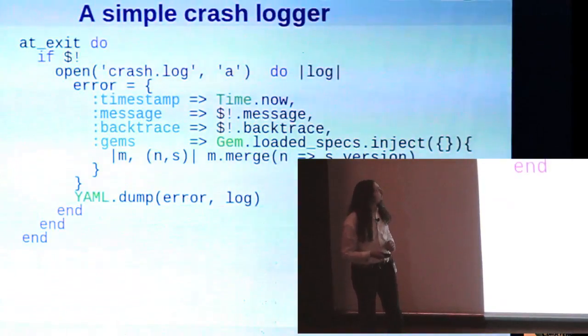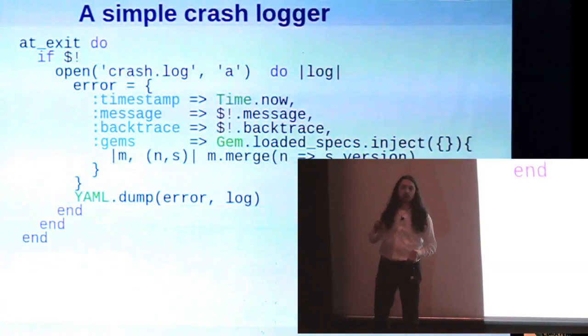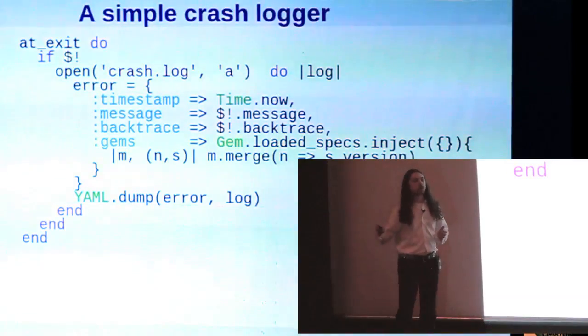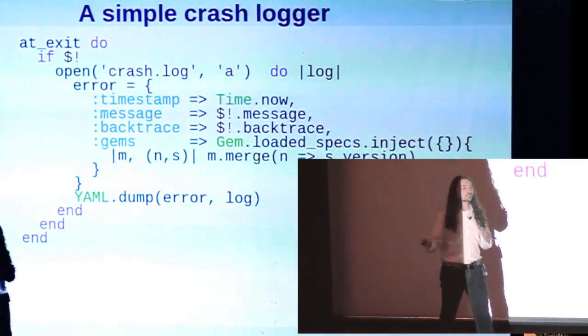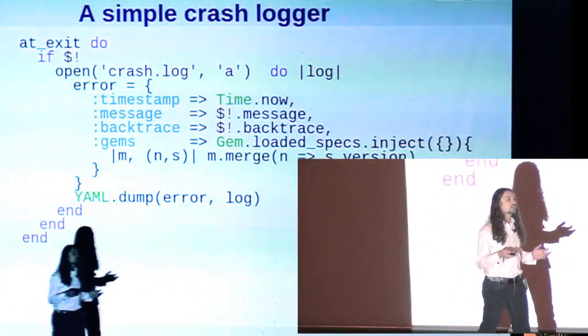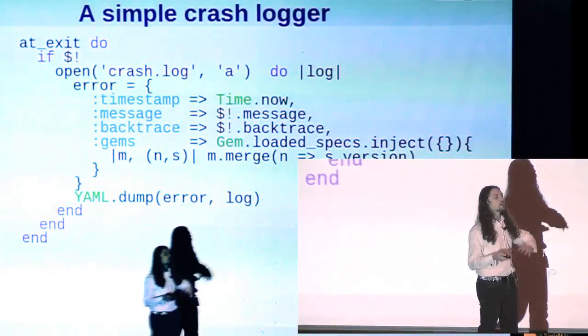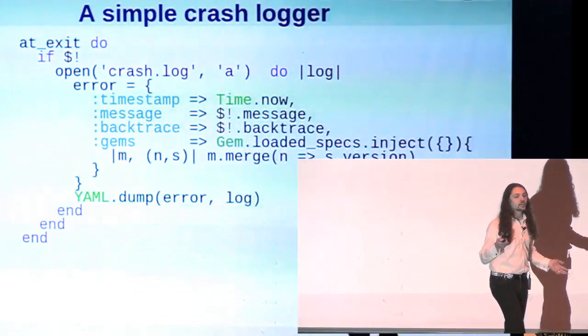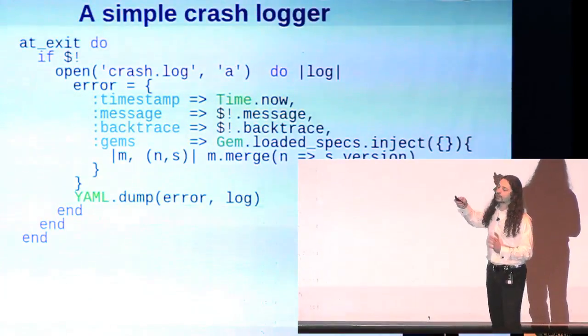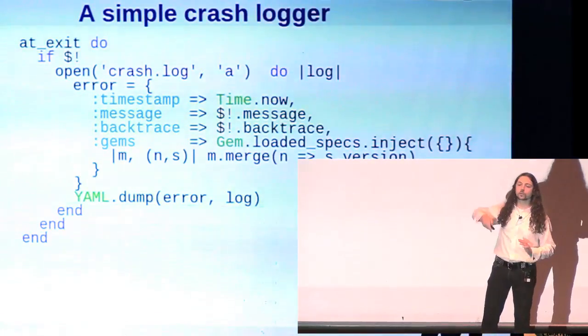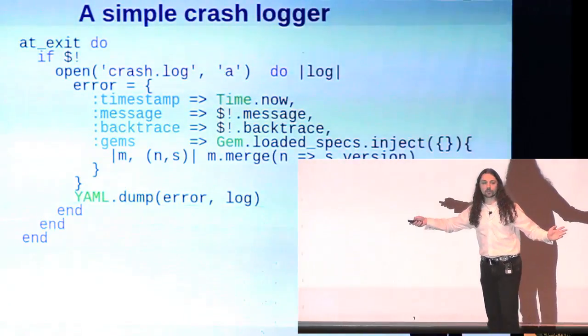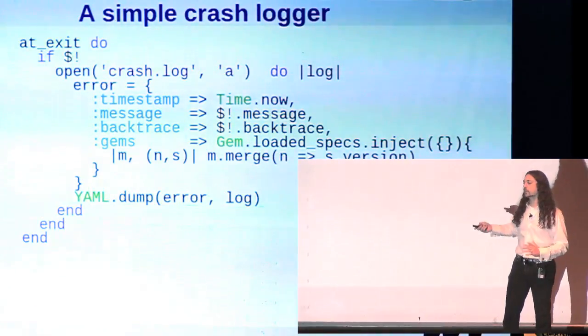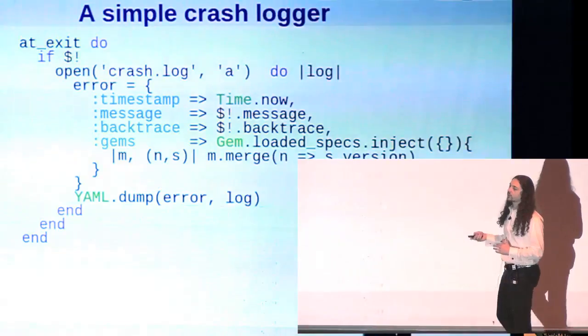This is useful for a few things. Here's one thing it's useful for. Have you ever had a case where you wished you could add some kind of crash logger to an application? So you want to catch exceptions that are not handled and they're just bubbling out and causing the program to end. But for one reason or another, it's not convenient to put a big begin rescue end around the entire program. You want to just sort of plug a crash handler in.